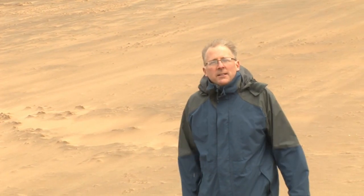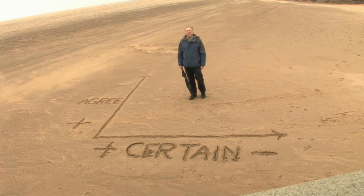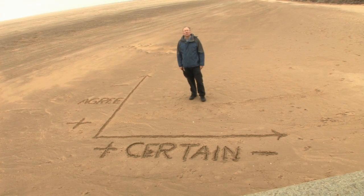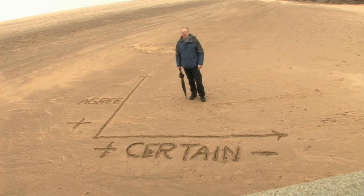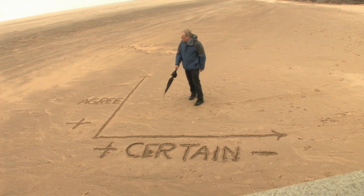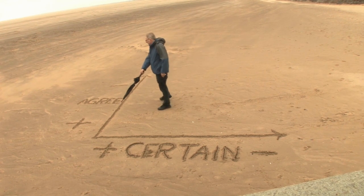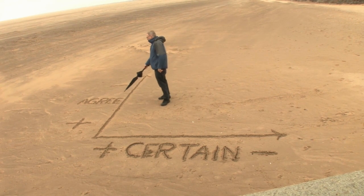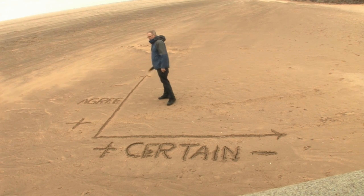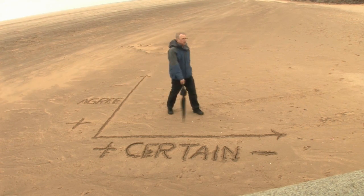This is the Stacey Diagram. All Ralph Stacey did — and it was absolutely brilliant — was combine two axes: an axis of agreement and an axis of certainty.